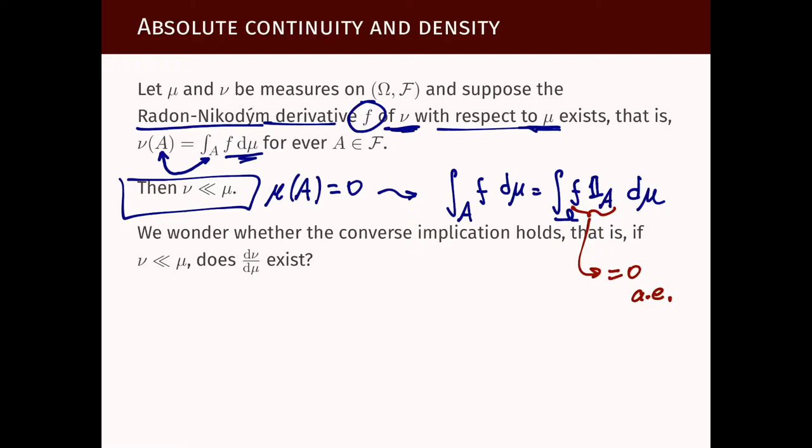In summary, what we just proved is that if μ(A) = 0, this implies ν(A) = 0, which is exactly the definition of ν being absolutely continuous with respect to μ.